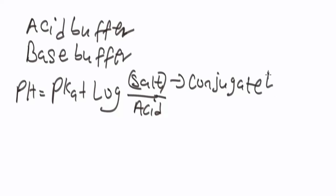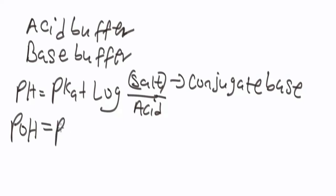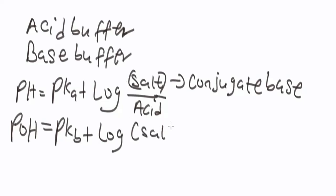The conjugate base here is the salt. Whereas the pOH of a base buffer using the Henderson-Hasselbalch equation is calculated using: pOH = pKb + log([conjugate acid] / [base]), where the conjugate acid is the salt.